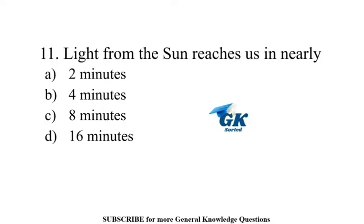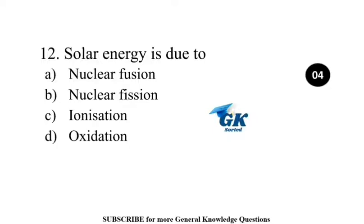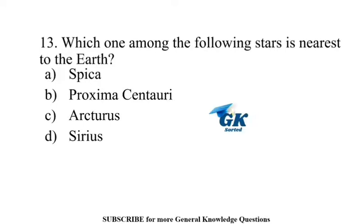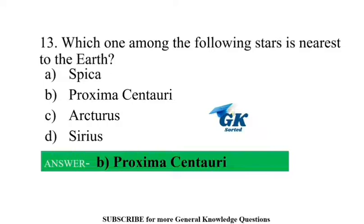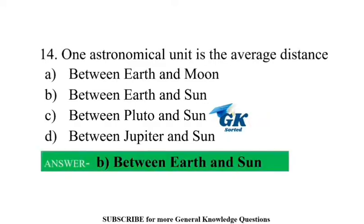Light from the Sun reaches us in nearly 8 minutes. Solar energy is due to nuclear fusion. Which one among the following stars is nearest to the Earth? Proxima Centauri. One astronomical unit is the average distance between Earth and Sun.